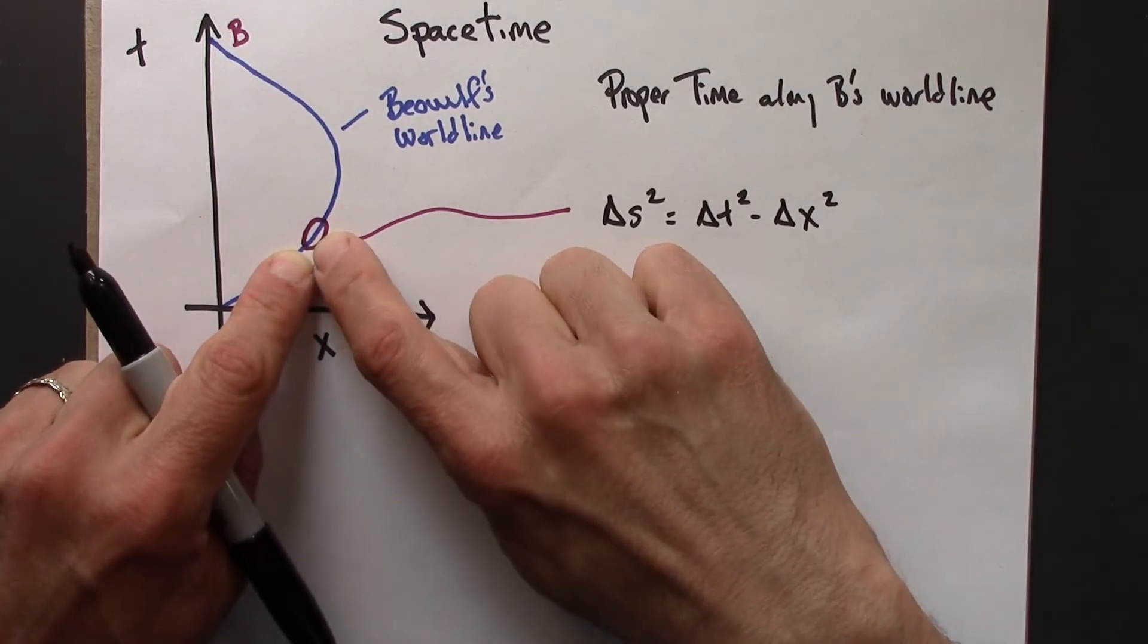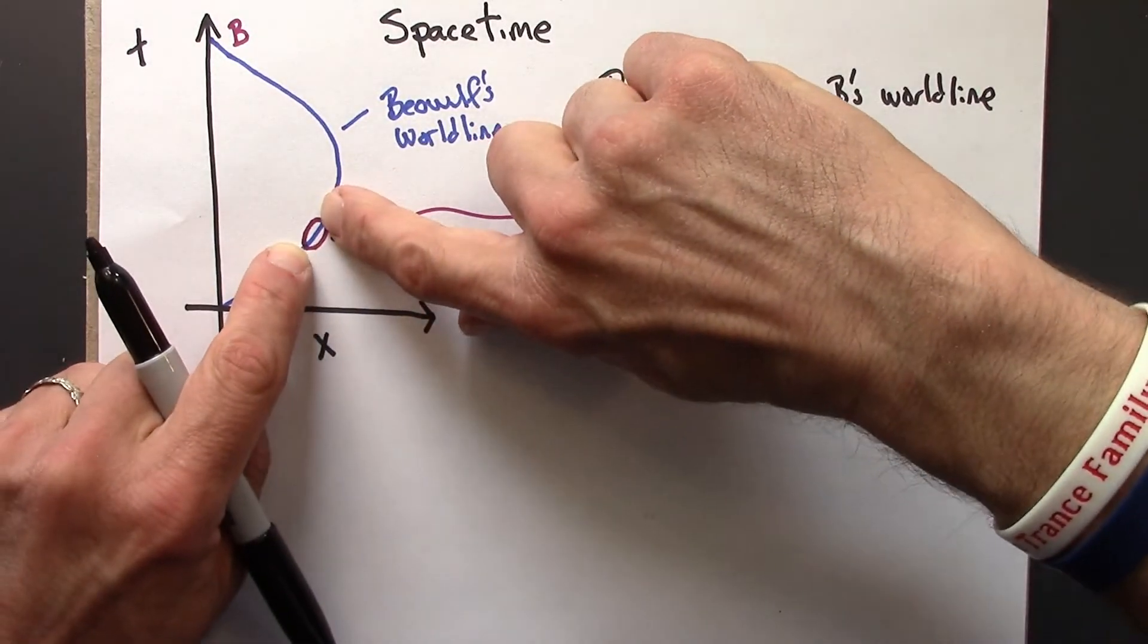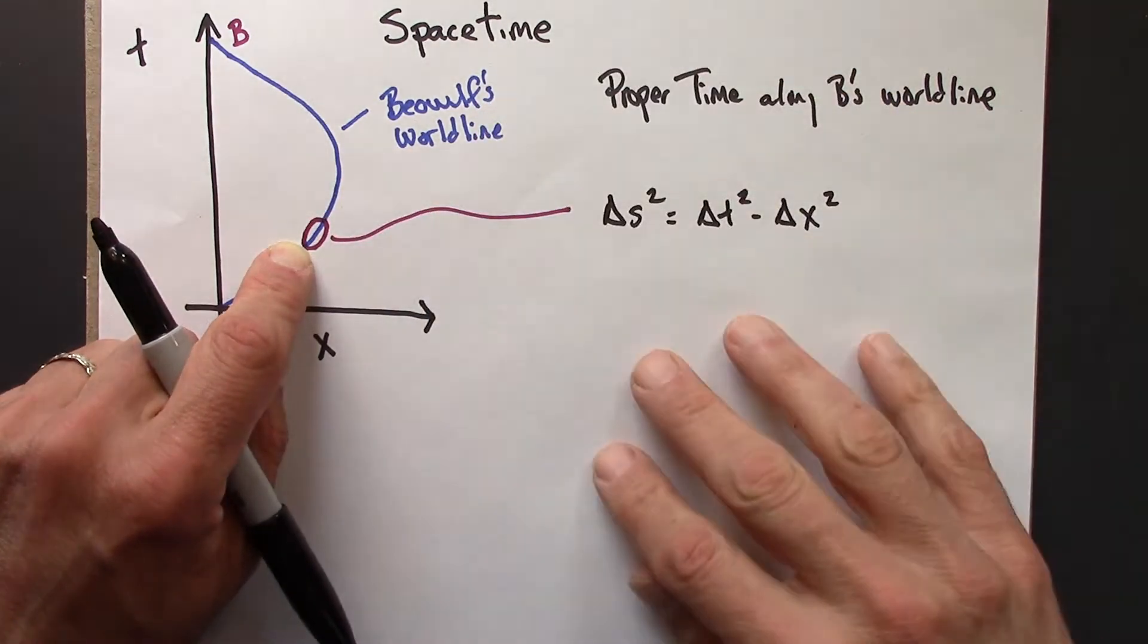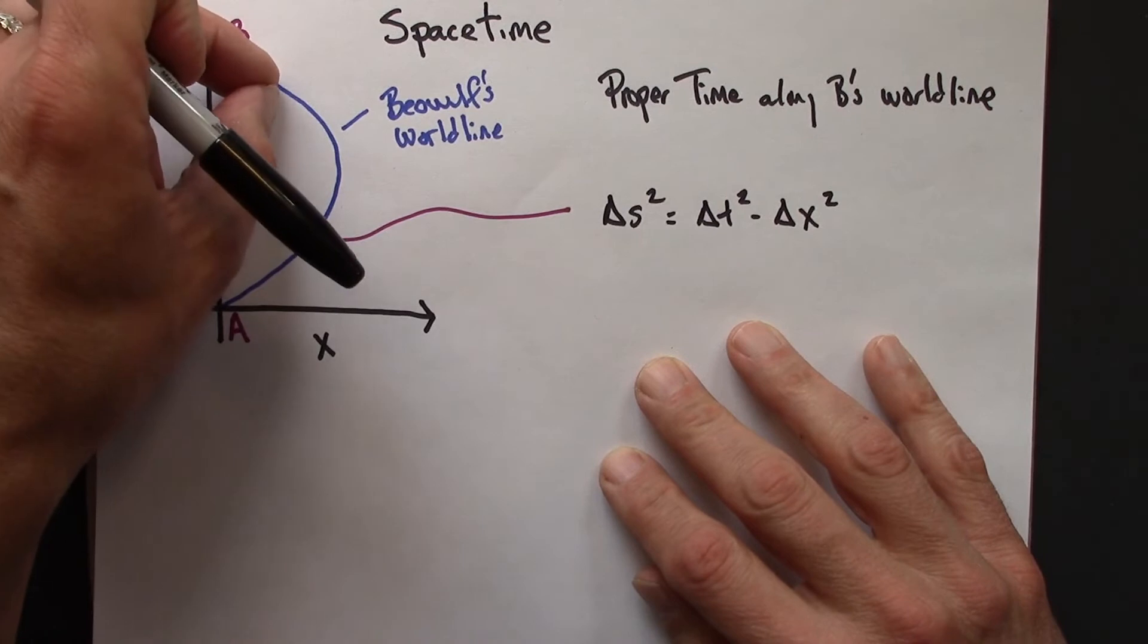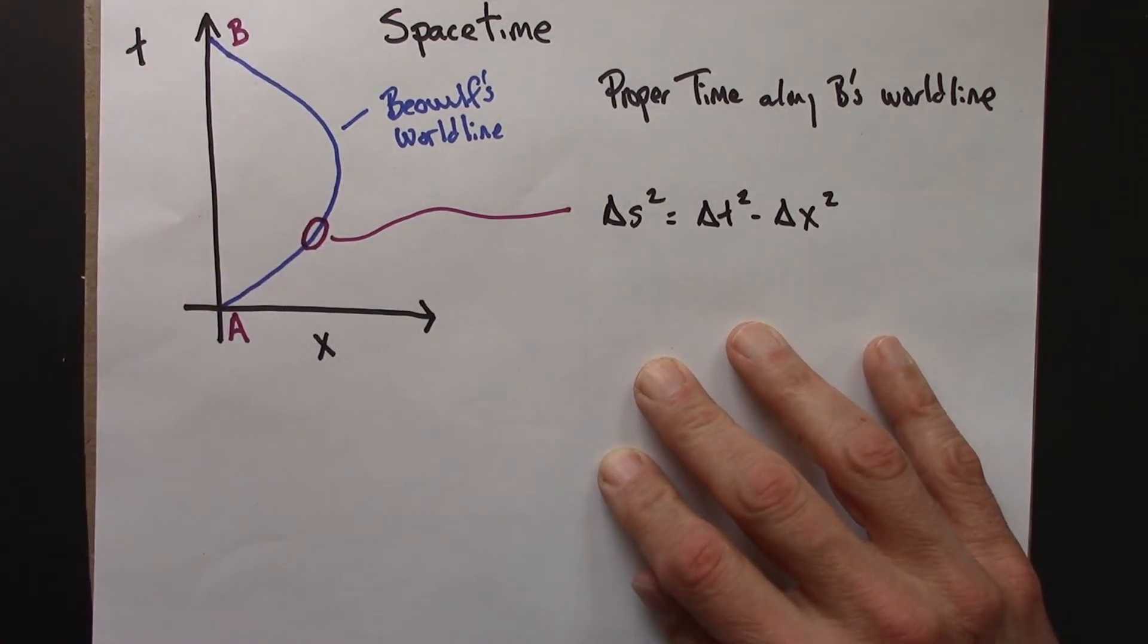We know how to calculate the spacetime interval from here to here, if we assume that it's constant velocity. Let's do that, and then we're going to add up all the little spacetime intervals, just like we added up all the little hypotenuses before.